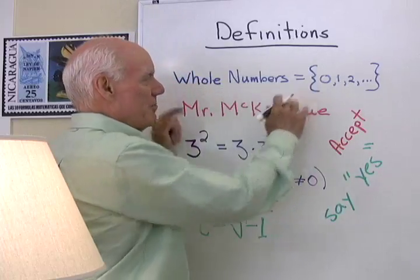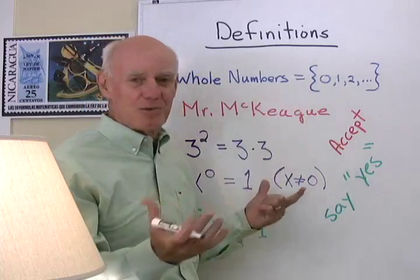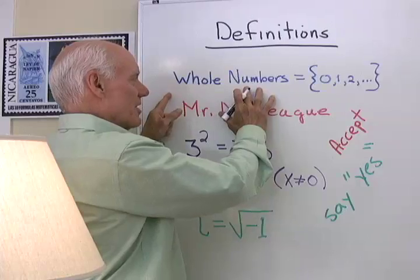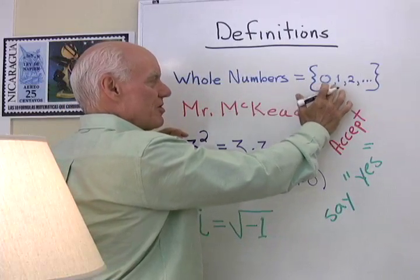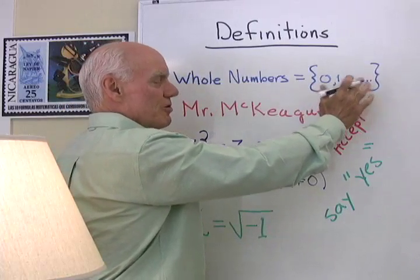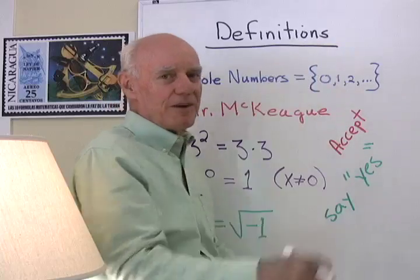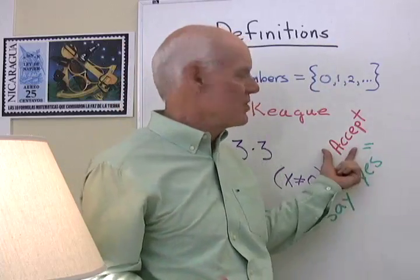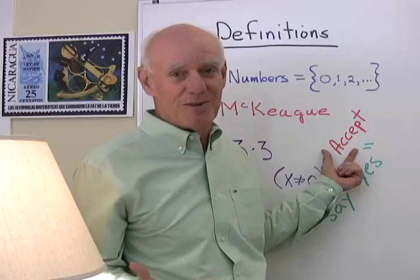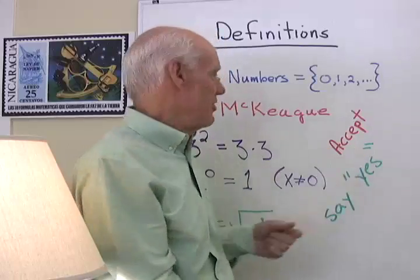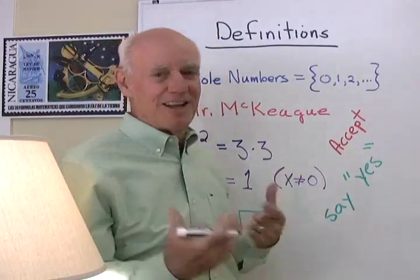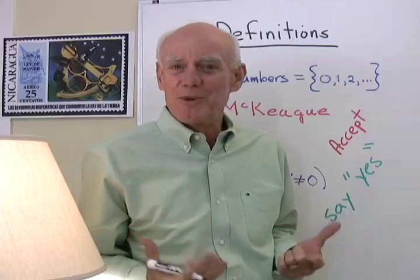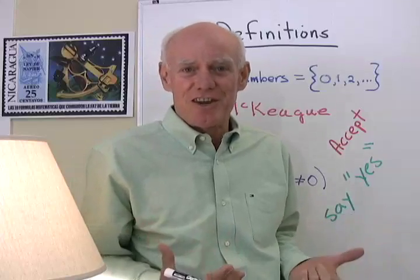Some of the simple definitions that we have in mathematics, we just name things — like whole numbers, we say it's 0, 1, 2, 3, 4, 5, and so on and so forth. It's a definition; all we do is accept it. Another definition would be Mr. McCaig — that's me. We don't really ask why; we just say that's the definition.